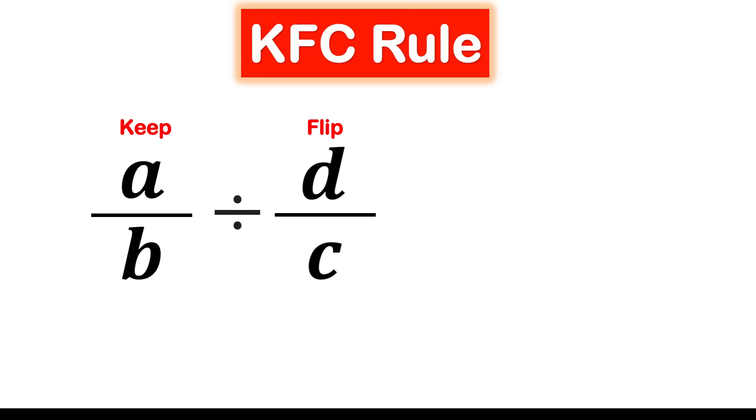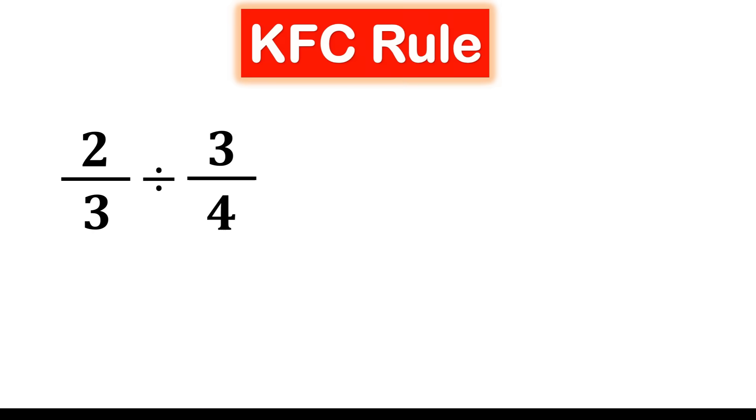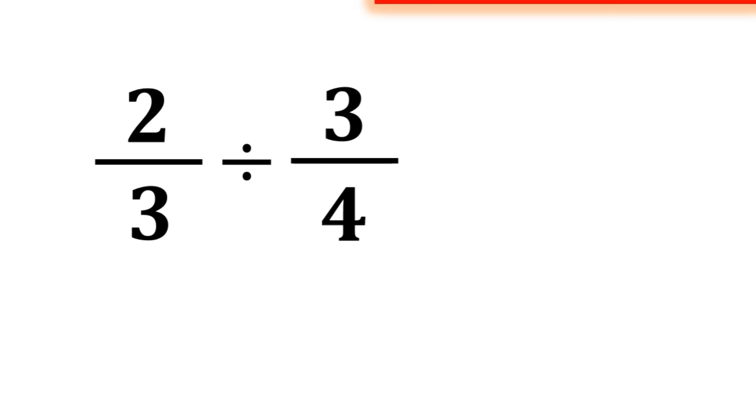That's it, just three simple steps to conquer fraction division. Let's see the KFC rule in action with some real examples. First example: we have two thirds divided by three fourths. We keep two thirds, we flip three fourths to four thirds, and we change division to multiplication.